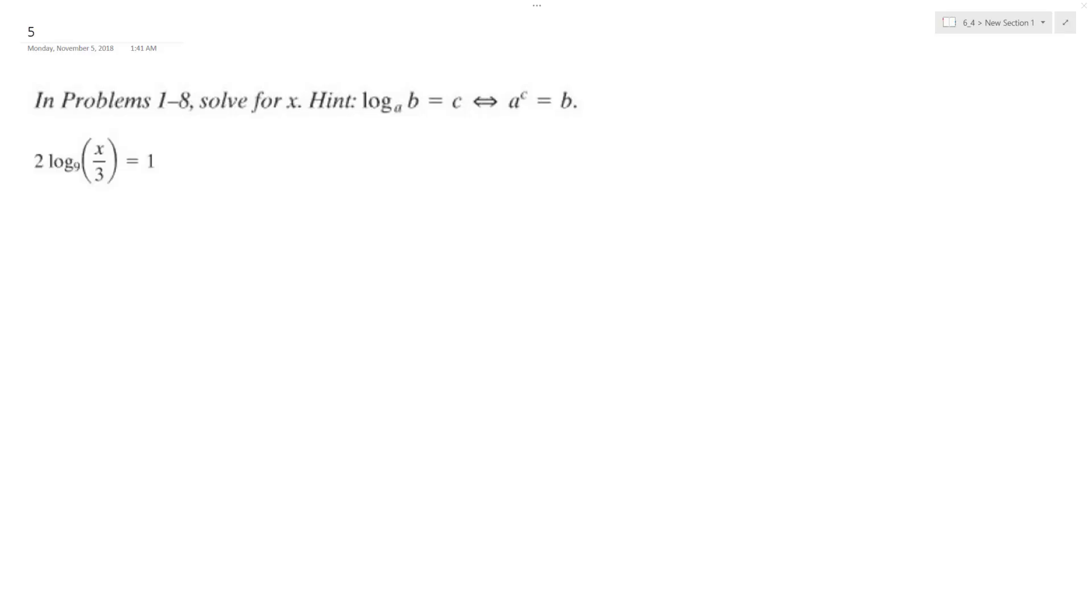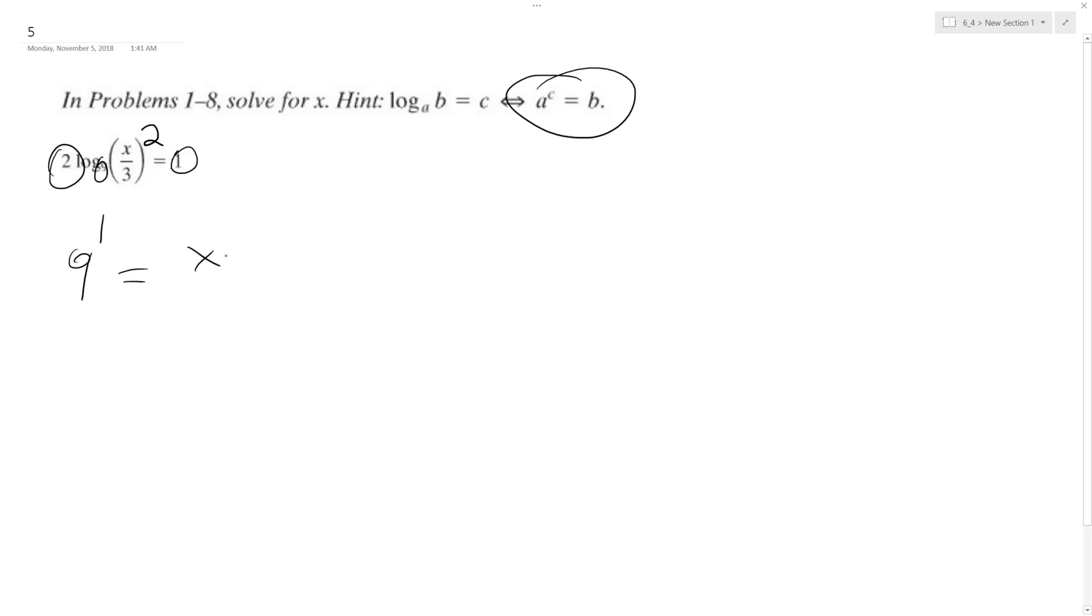All right, so we want to solve for x in this equation. We're going to rewrite it as an exponential form, as you can see here. Oops. So I'm going to take 9 raised to the 1. So this is the base 9 raised to the 1. And actually this 2 in front of the logarithm, you can rewrite this out here in front. So it's going to be equal to x squared over 9.